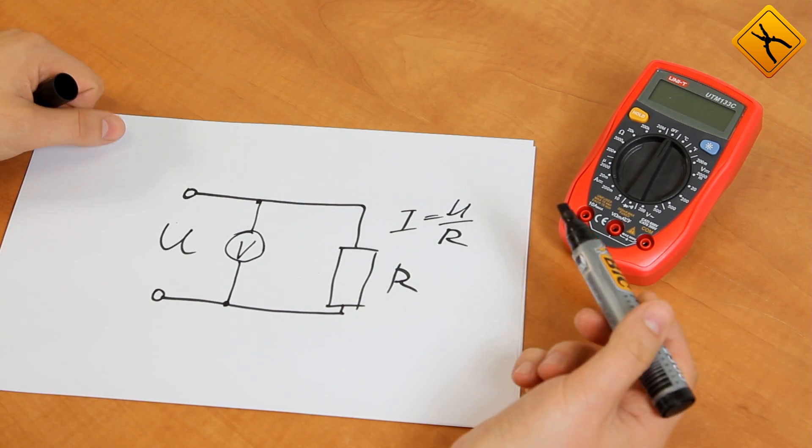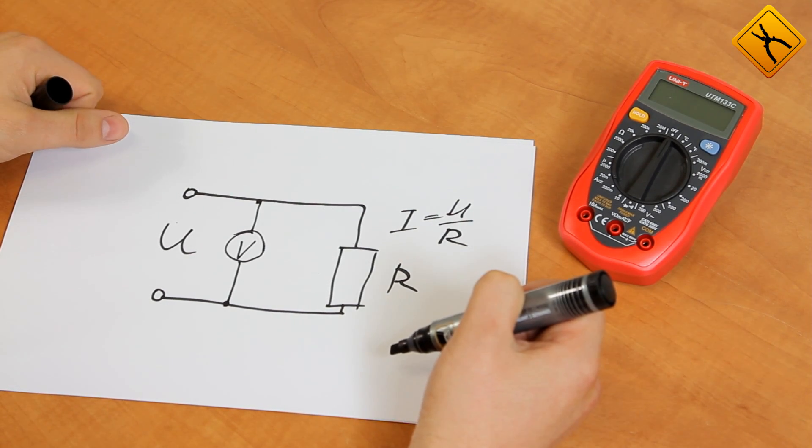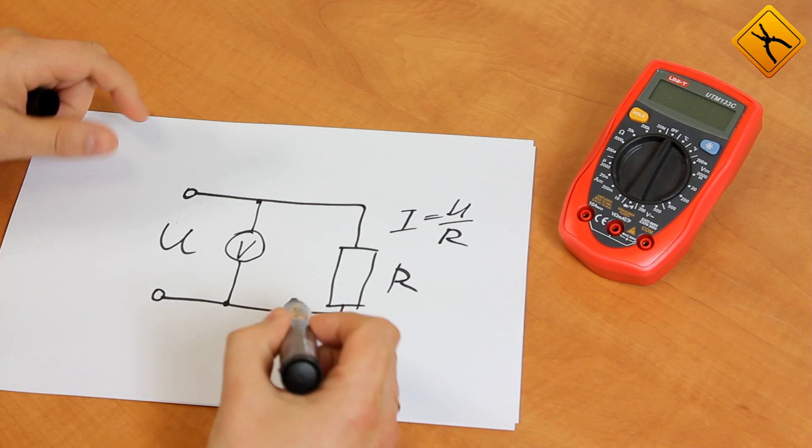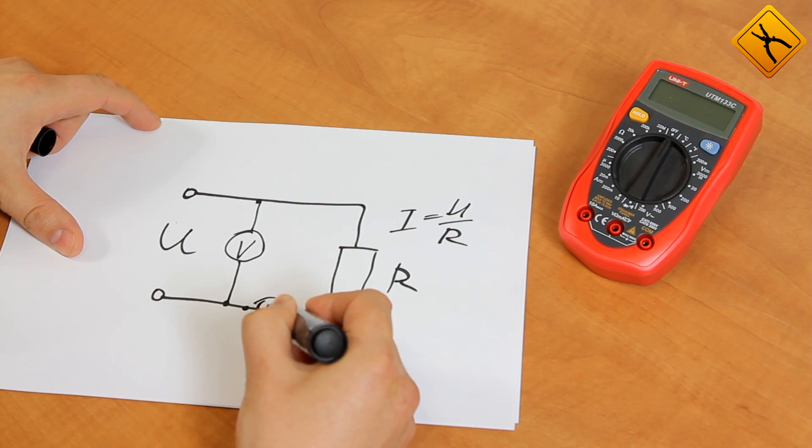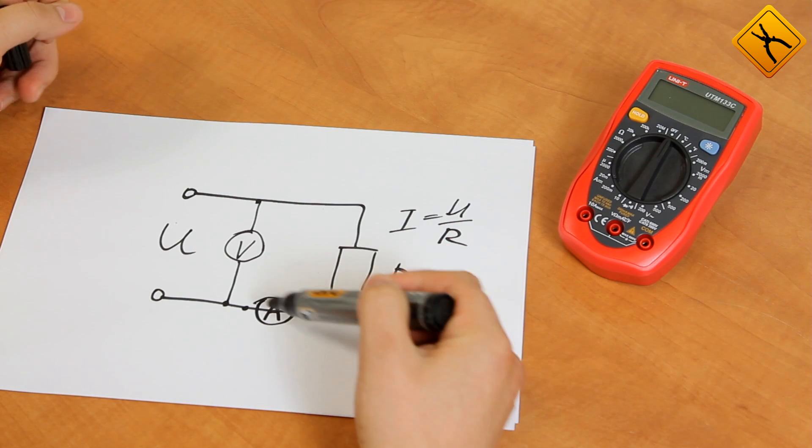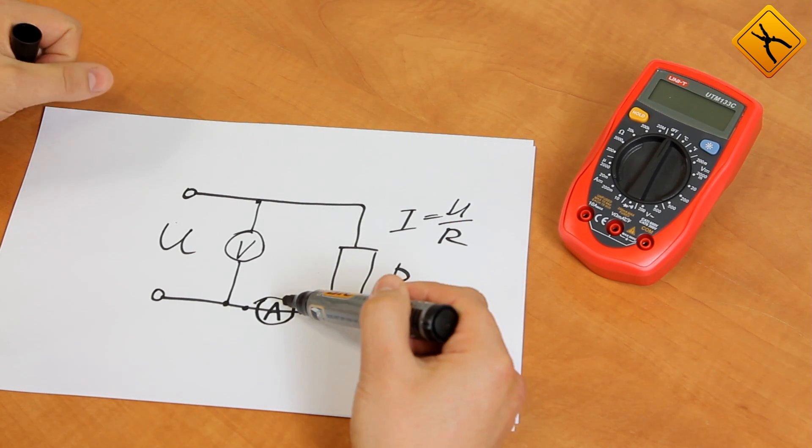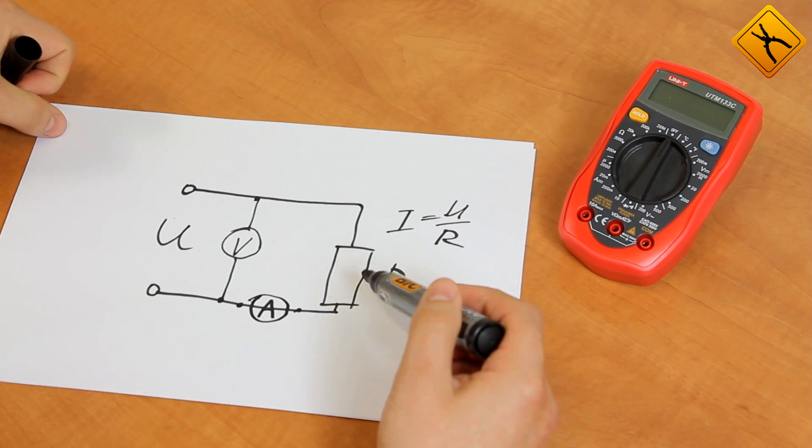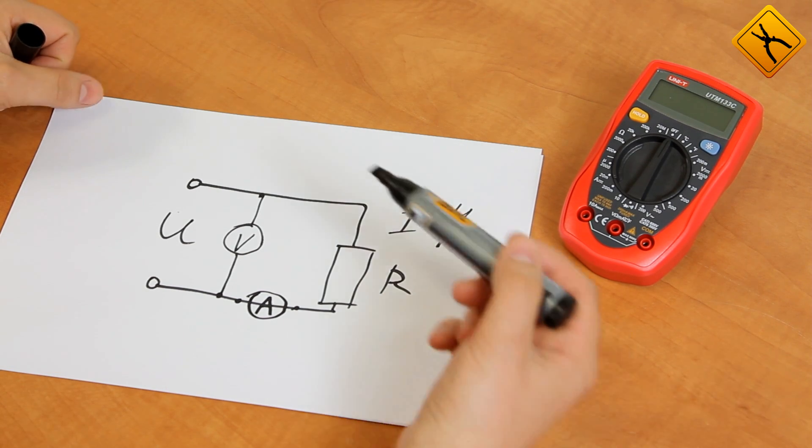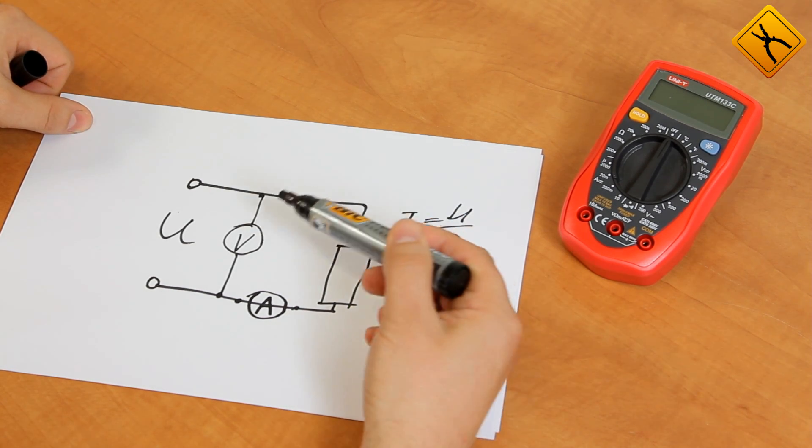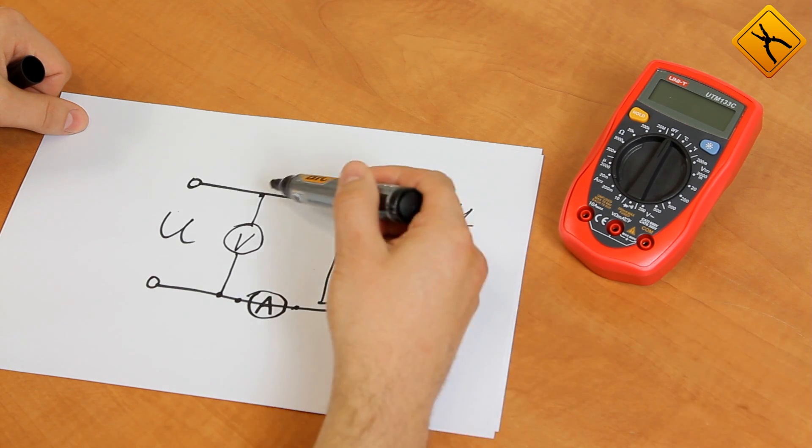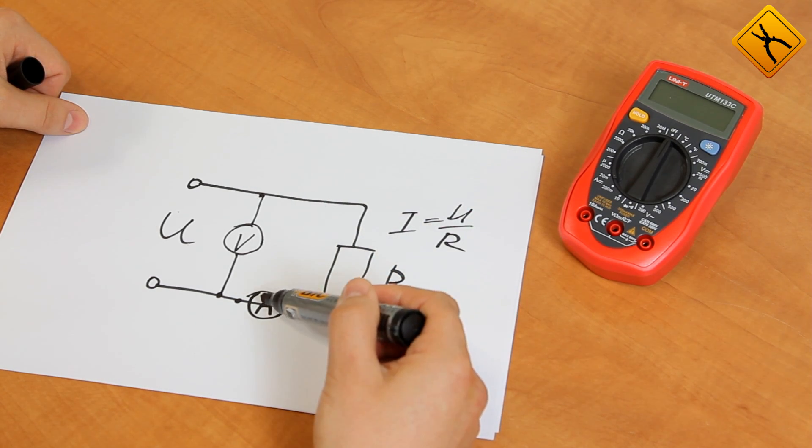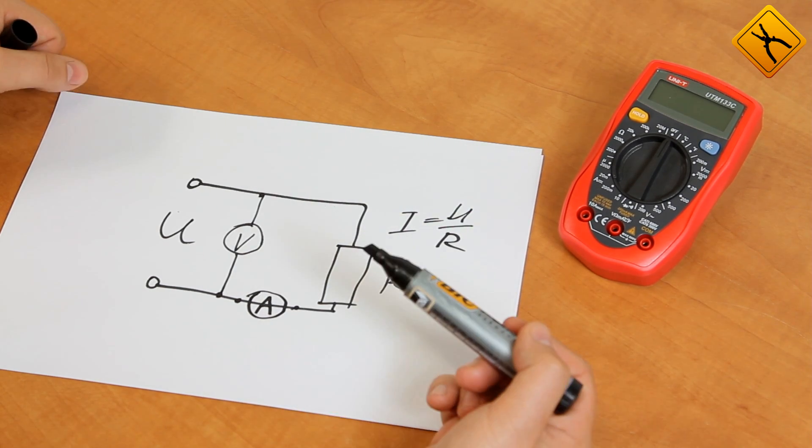In case we need to measure the current, the ampermeter is connected splitting the chain. To have the minimum effect on the circuit, its resistance has to be minimum, close to zero. So the voltmeter is connected in parallel with maximum resistance. The ampermeter has a series connection with minimum resistance. We may take it as zero.